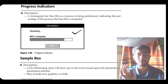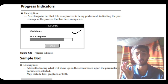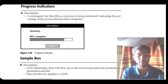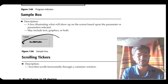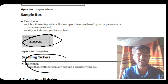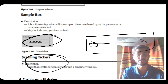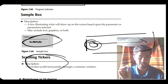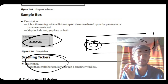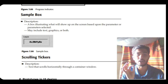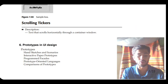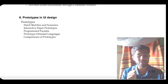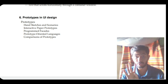A progress indicator is commonly used to show how much progress has been completed — you can use this in your scripts as well. A sample box contains sample text. Finally, scrolling tickers display text that scrolls across part of the screen, commonly seen on government or railway websites. These are the different presentation controls.